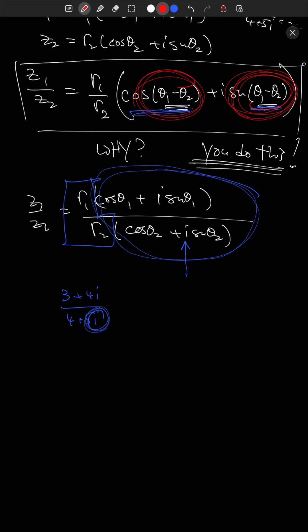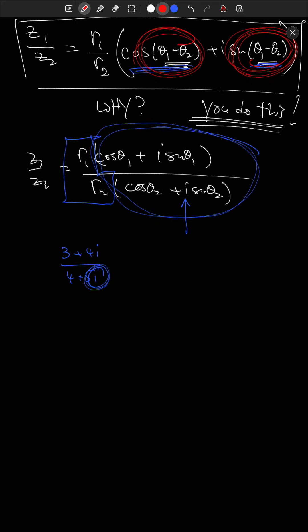So that'll be it for 6.2. It might look like we haven't done too much beyond transforming to trig form and seeing this nice idea of multiplication being related to rotation of angles. But in 6.3, we're going to use trig form very, very heavily in order to solve problems that previously you could not do at all.